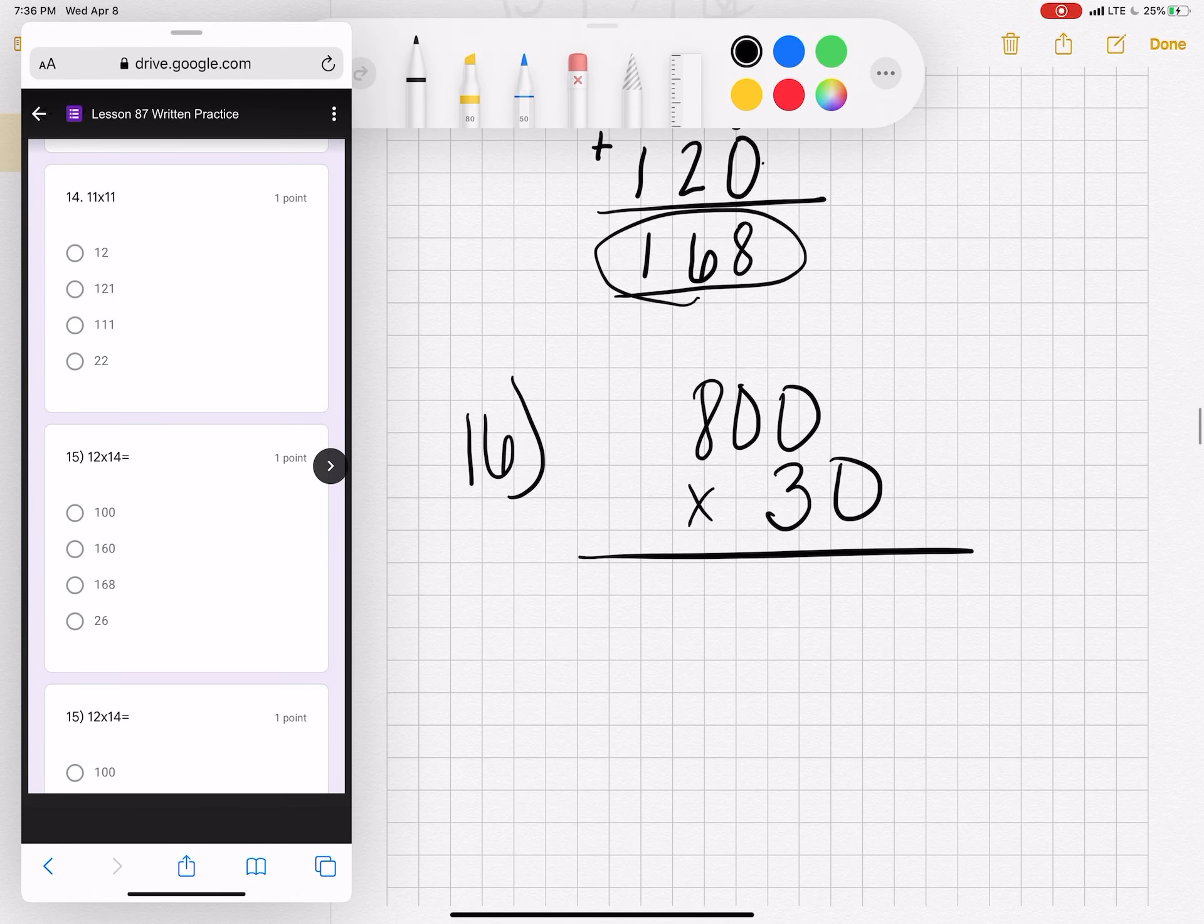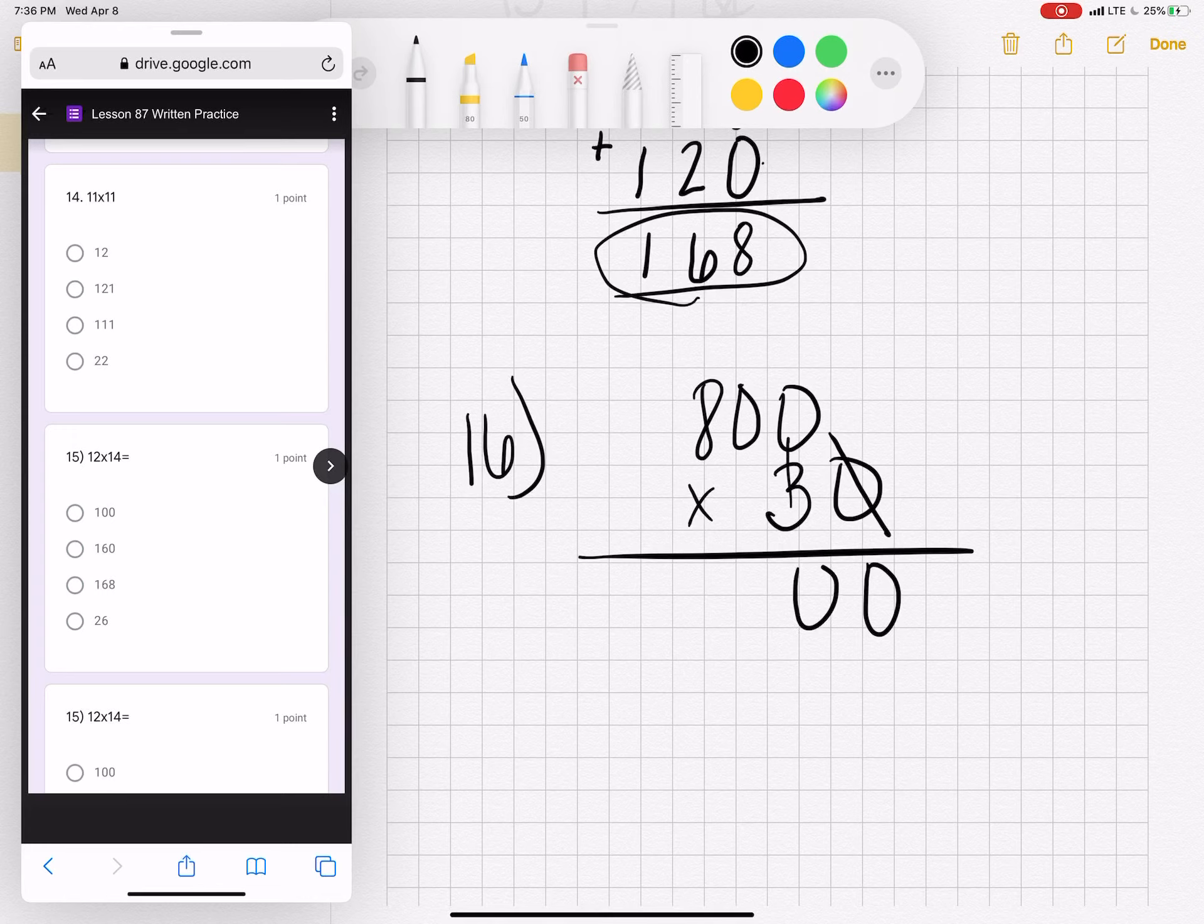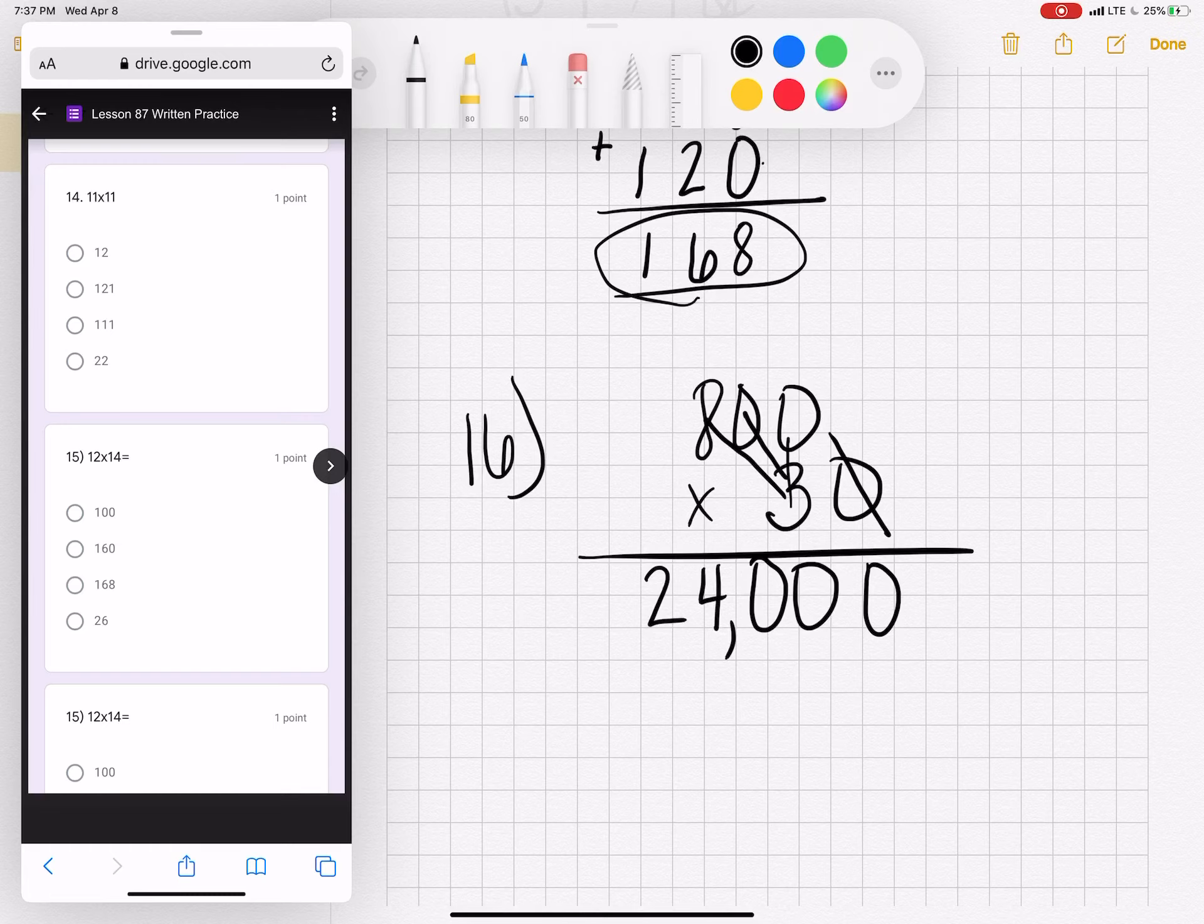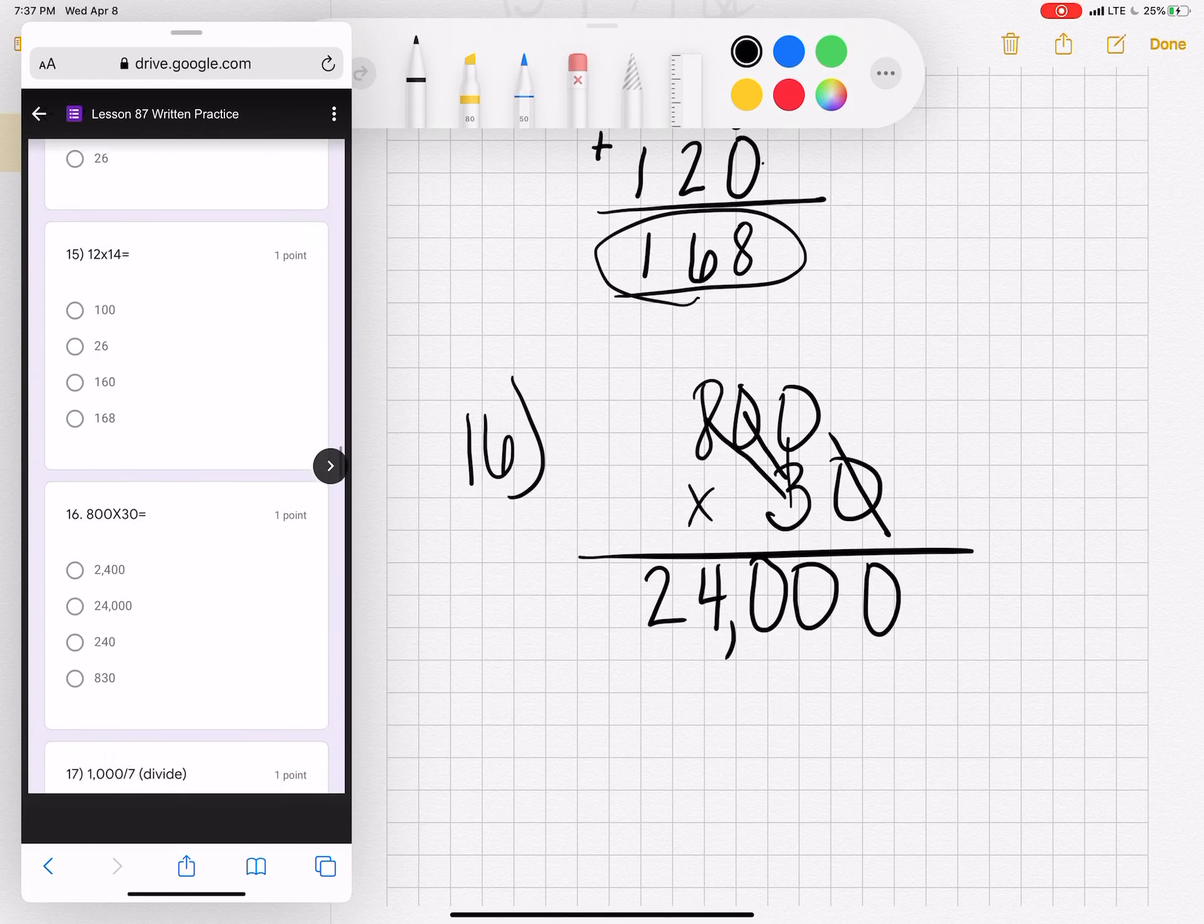Now that we know how to multiply two digits, I still love leaving the zero over the edge and just adding it to your answer as often as you can. It is so much easier. So now I've put the zero in my answer. I can just do three times zero. Zero. Three times zero. Zero. Three times eight. Twenty-four. Twenty-four thousand on number sixteen.